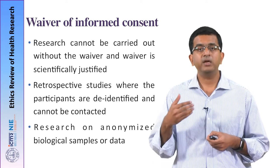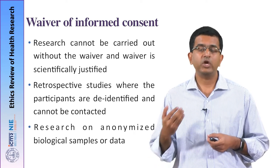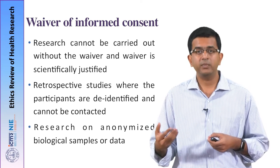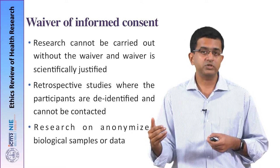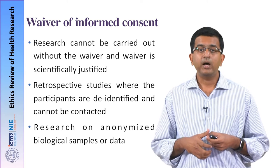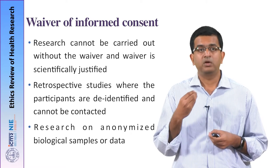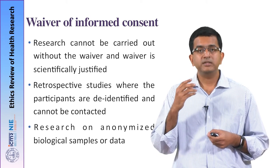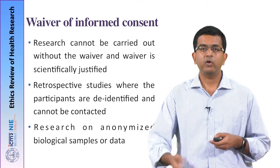Another situation is when the data being used for analysis are all de-identified and de-linked data which cannot be traced back to the origin. These are usually secondary data from large databases. When they are adequately de-identified and de-linked from the source, informed consent may be waived. Research on anonymized biological samples — like unlinked anonymous testing for HIV/AIDS — is a very popular practice. When there is a delinking between the specimen and the individual who gave the specimen, informed consent may be waived.